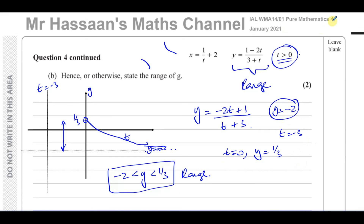This is from January 2021 Pure Mathematics P4 International A-level. Other questions from this paper can be found in the playlist, including the old method. I also have a playlist collecting all parametric equation questions from P4. You can subscribe by clicking the link, and I'll link the old video so you can compare the two approaches. Thank you for watching and see you soon.